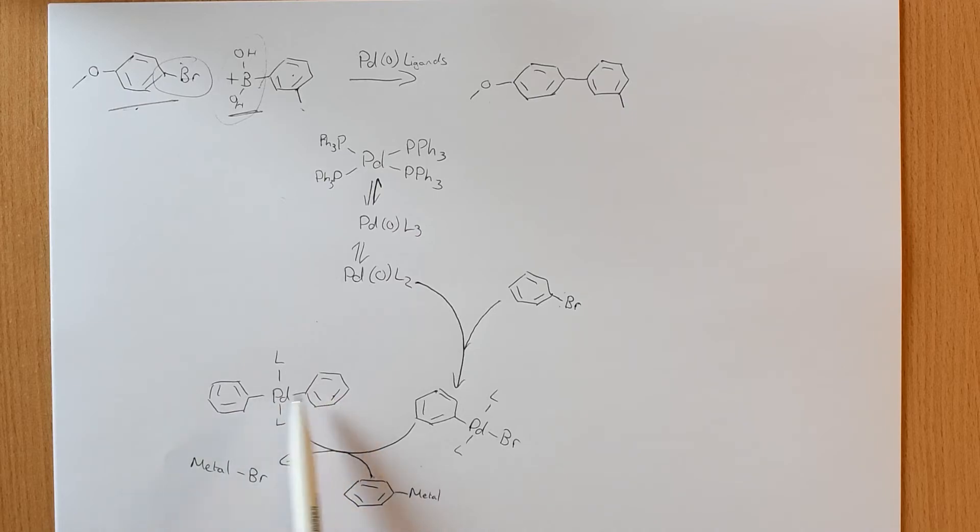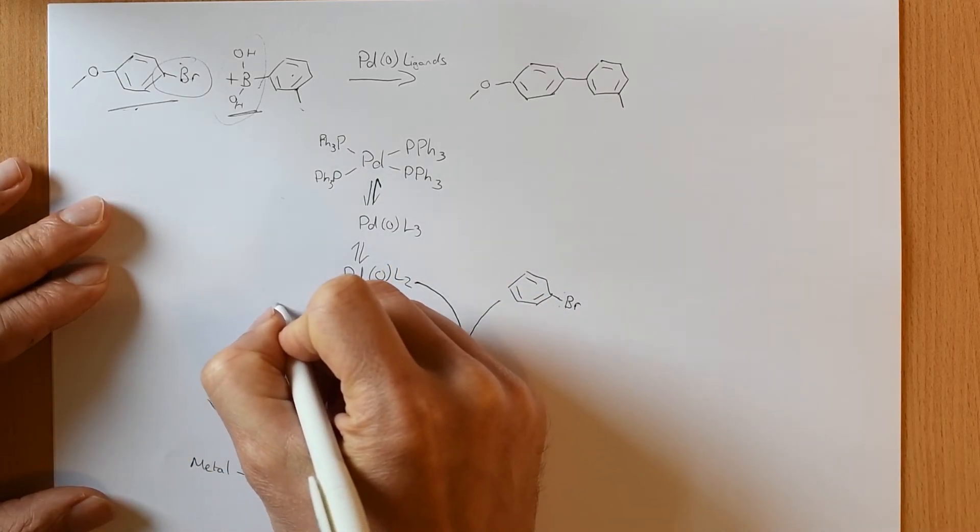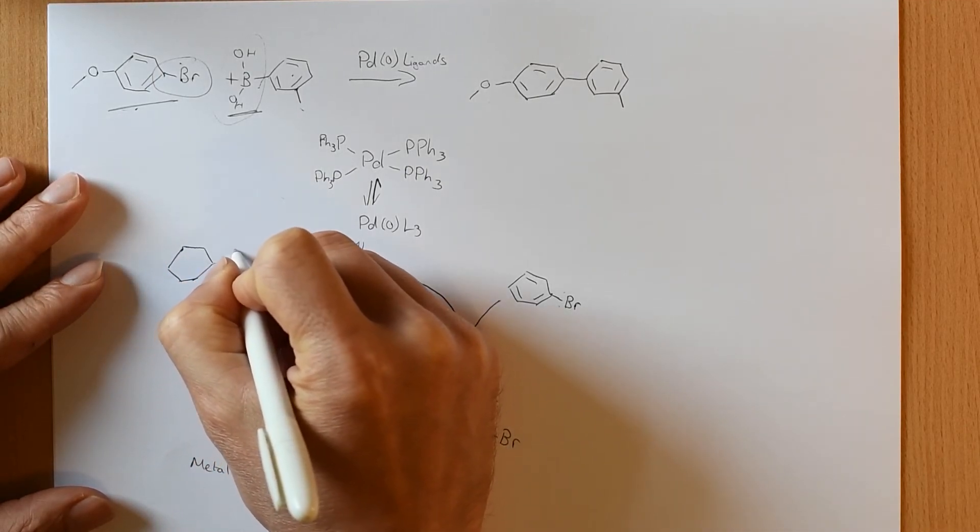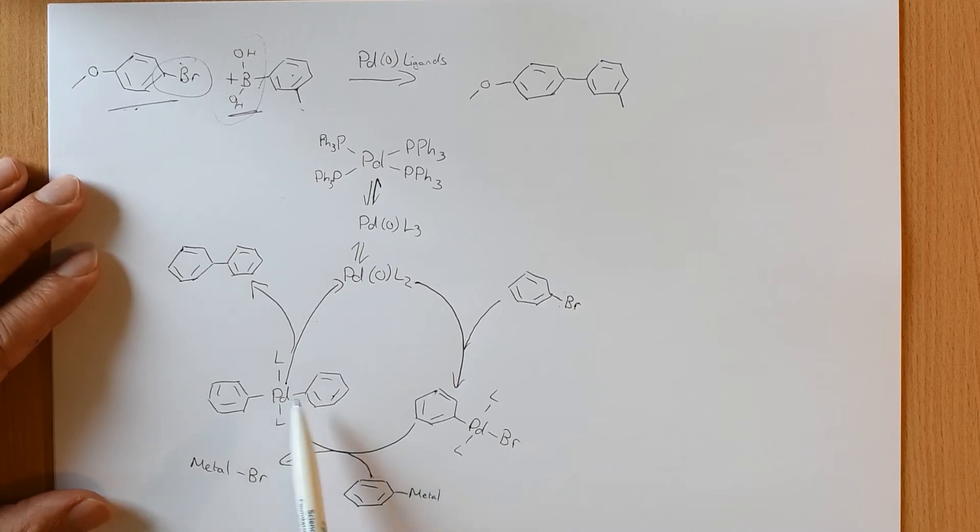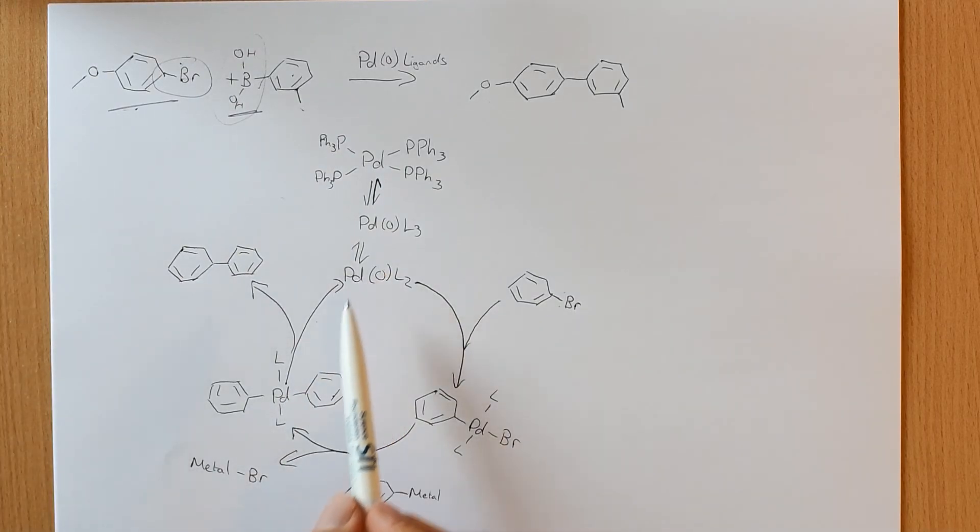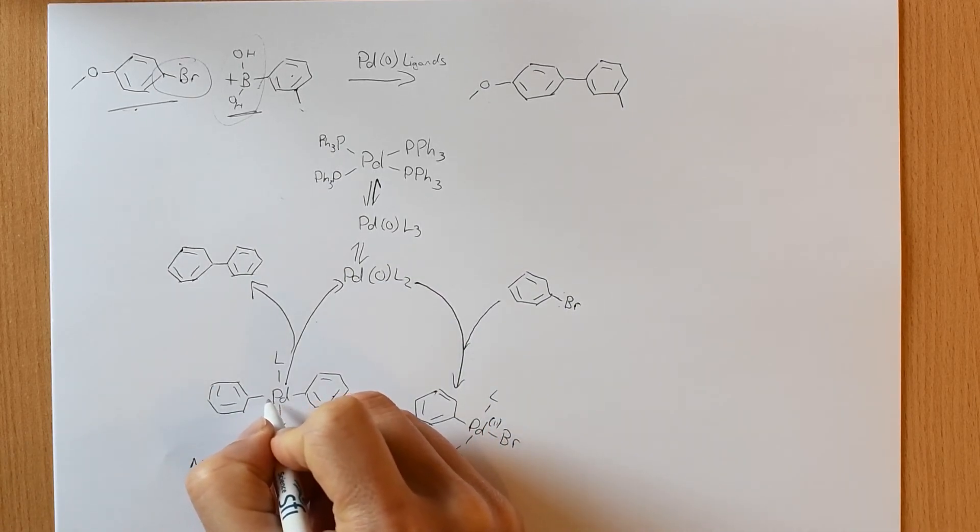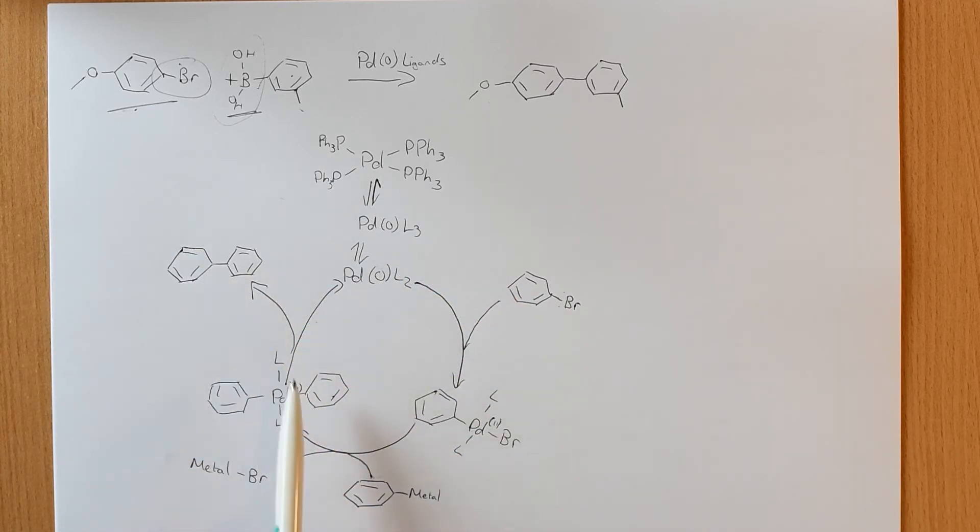In order for this to undergo the last step, which is reductive elimination, they are going to have to be cis to each other. So this is going to have to undergo some isomerisation before the last step, which is reductive elimination, occurs. I'm not going to draw that in though, because this is just very much an outline of what happens. This undergoes reductive elimination. And so now, if you think about this, the palladium is reduced. Here it's palladium 2. Here it got oxidised, palladium 2. Here it's still palladium 2. And now it's been reduced, reductive elimination, back to palladium 0.